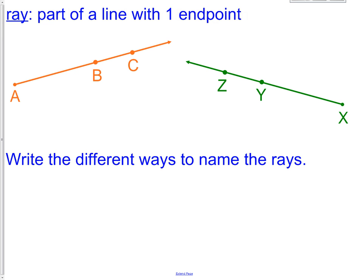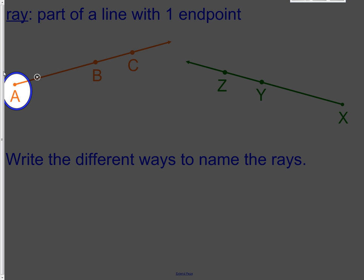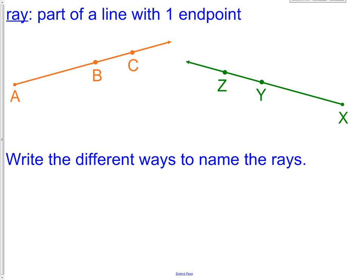An angle is made up of two rays. A ray is simply part of a line that has one endpoint. For the orange ray, its endpoint is A. Notice how the ray starts at A and continues forever in one direction. It does not go both directions like a line, and it does not stop on both ends like a line segment.